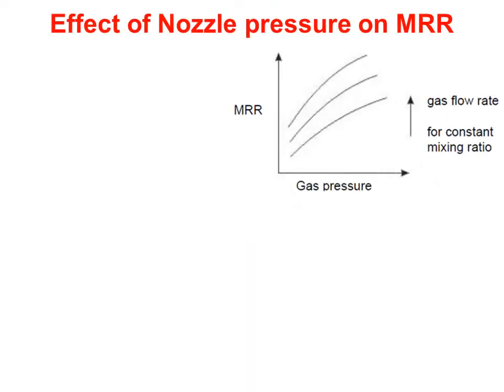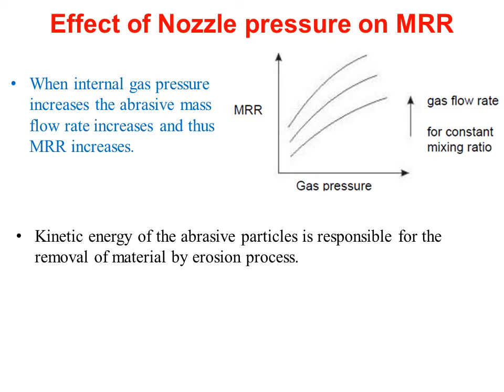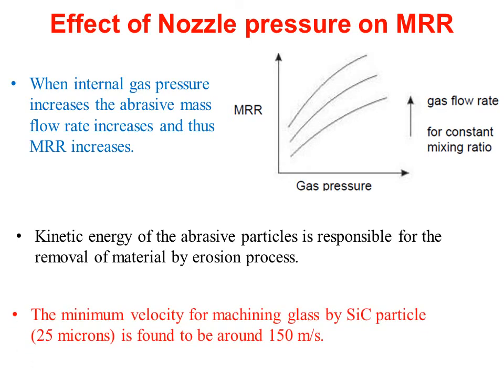Effect of nozzle pressure on MRR. When internal gas pressure increases, the abrasive mass flow rate increases and thereby MRR increases — we can see this trend in the diagram. Kinetic energy of the abrasive particle is responsible for the removal of material by the erosion process. The minimum velocity for machining glass by SiC particle is found to be around 150 m per second.